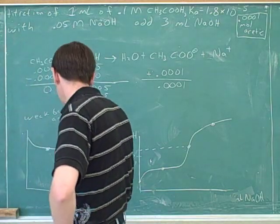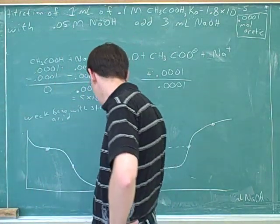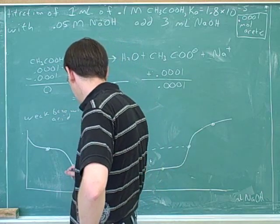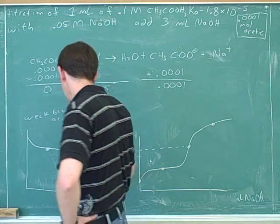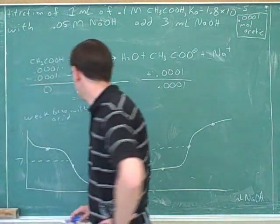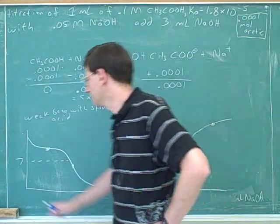So this would be the half equivalence point. This steep region here would be the equivalence point. What can you say about the pH here? It's acidic. Yeah, because we've got a weak base and a strong acid equivalence point in the acidic region.